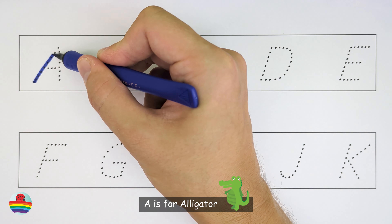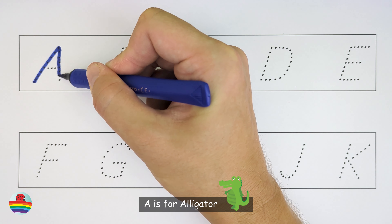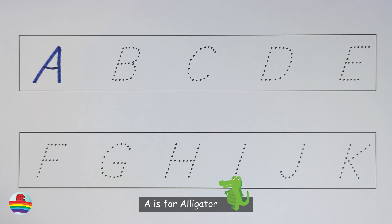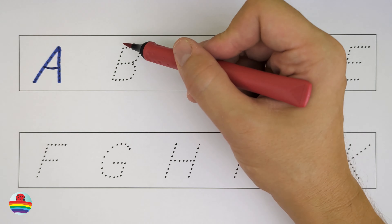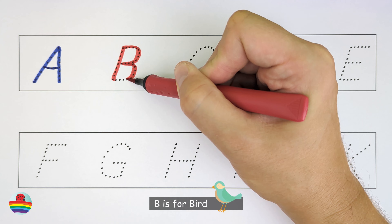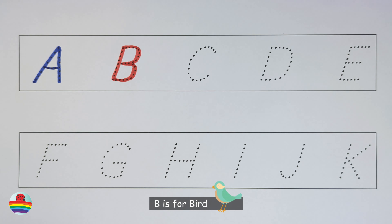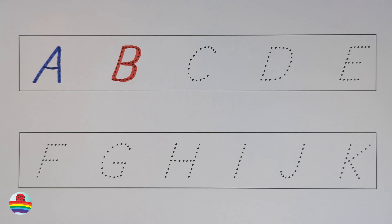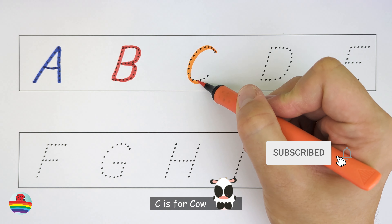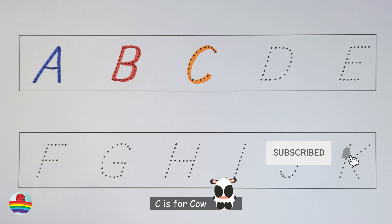A. A is for alligator. B. B is for bird. C. C is for cow.